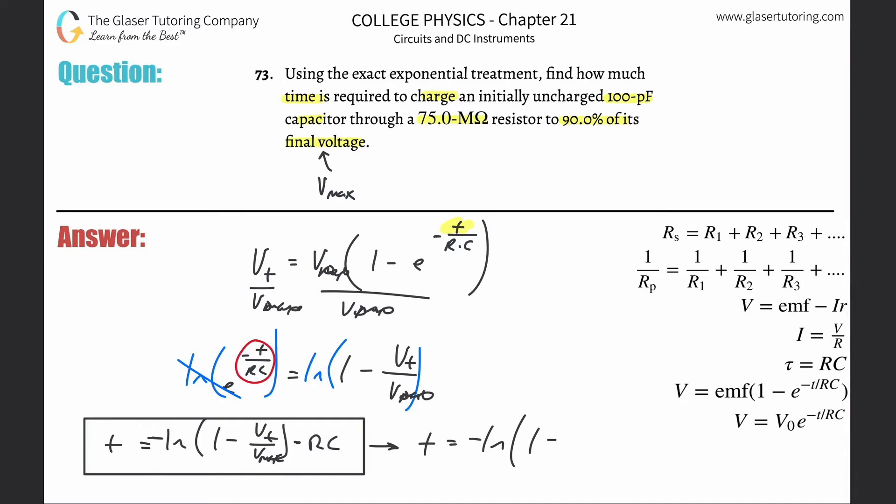Now we have to consider: if the capacitor is being charged to 90% of its final voltage, pretend the final voltage was 100. What is it then being charged to? If it's charged to 90% of its max, then the voltage at some point in time is 90, right? Doesn't that make sense? What's 90 over 100? If I took Vₜ over Vₘₐₓ, that is simply 90 over 100, that's equal to 0.9.